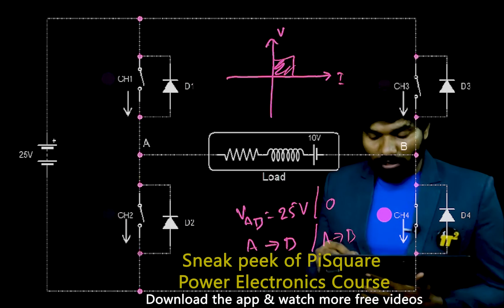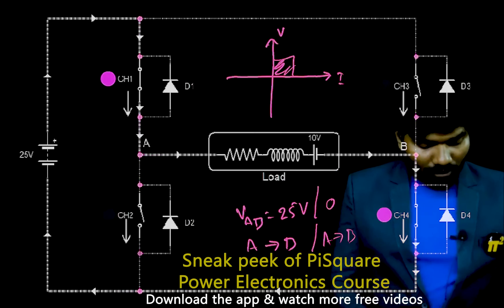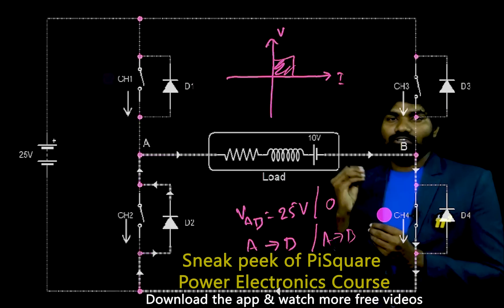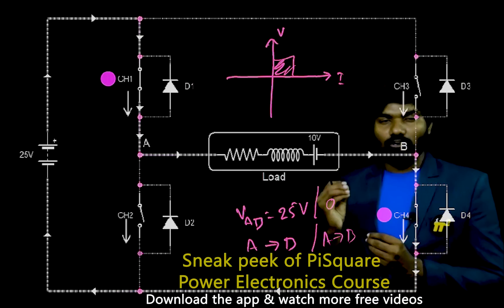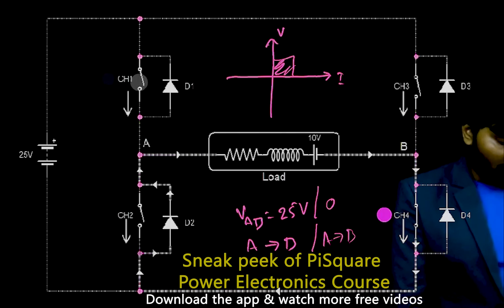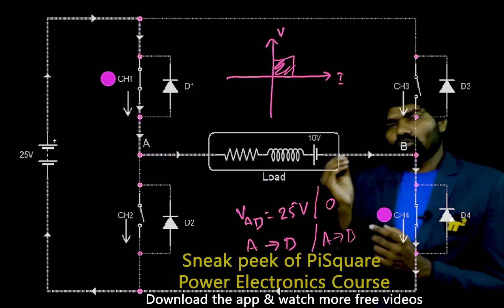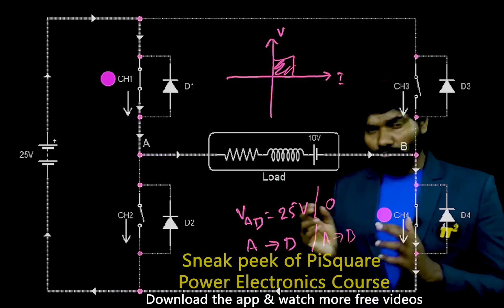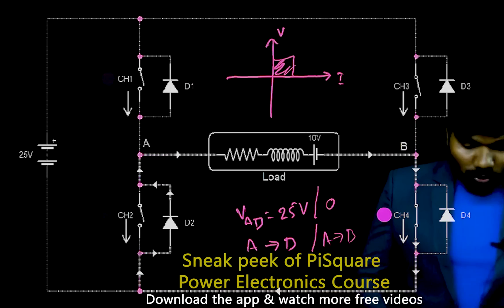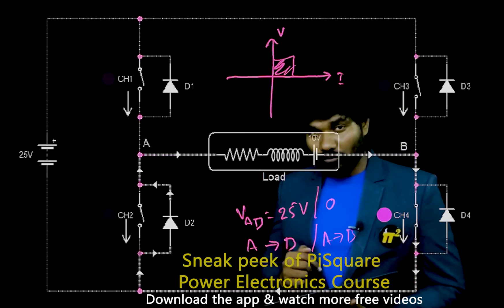So if you want to operate this chopper in first quadrant, what I will do is I will turn on CH1, turn off, on, off, on, off by keeping CH4 always on. CH1 I am just toggling to on, off, to on, off. That's it. That's the operation of type E chopper in its first quadrant mode.